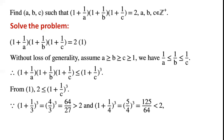Because (1 + 1/3)³ = (4/3)³ = 64/27, and (1 + 1/4)³ = (5/4)³ = 125/64, which is less than 2. So, 1 ≤ c ≤ 3.